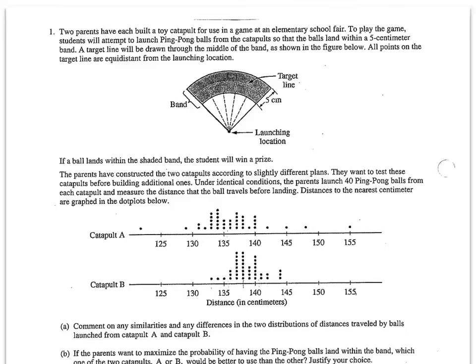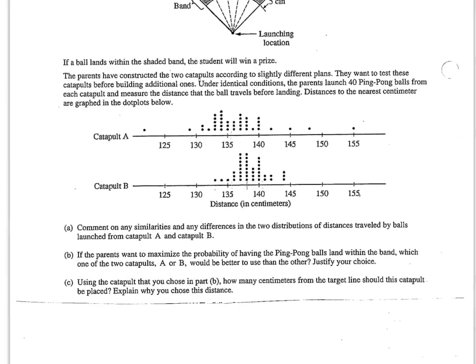So we've got some sort of carnival game involving a ping pong launcher, and we're testing these two catapults to see how far they're firing a ping pong ball, and we're measuring that in centimeters. So we've got two quantitative distributions, and we have 40 points of data here in each distribution, and we're going to compare the center, shape, and spread.